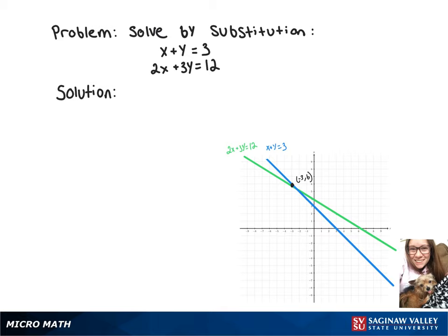We want to solve this system by substitution, so we'll start by rearranging the first equation so that we get y equals 3 minus x.